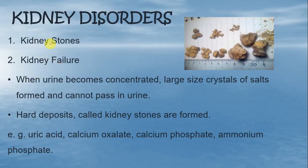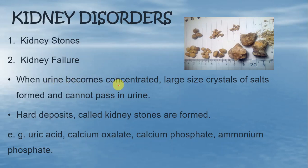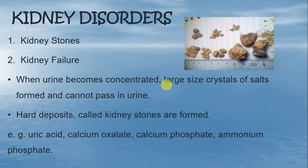First of all हम discuss करते हैं kidney stones को. ये kidney stones बनते कैसे हैं kidney के अंदर? When urine becomes concentrated, large size crystals of salts are formed and cannot pass in the urine. जब urine के अंदर salt की quantity जरूरत से ज्यादा बढ़ जाती है, तो urine concentrated हो जाता है, means water के निस्बत salts की concentration उसमें बहुत ज्यादा हो जाती है. As a result, वहाँ पे बड़े-बड़े crystals salts के बन जाते हैं और urine से pass नहीं कर सकते. वो kidney के अंदर deposit होते रहते हैं. Hard deposits called kidney stones are formed.